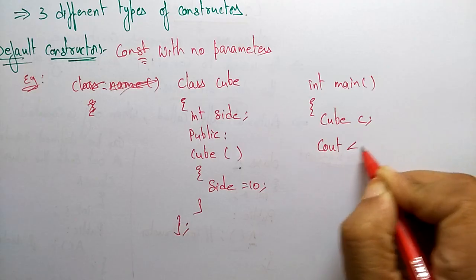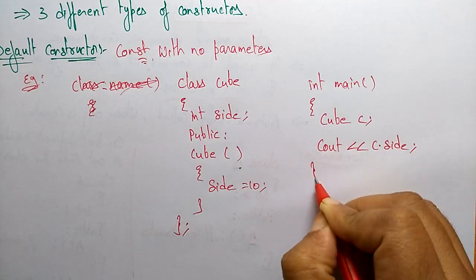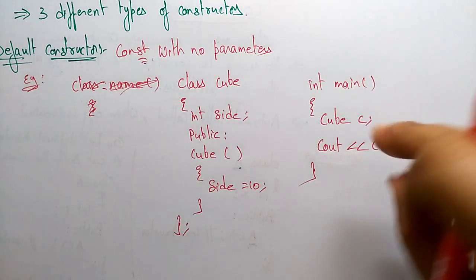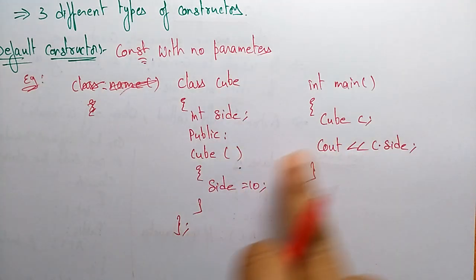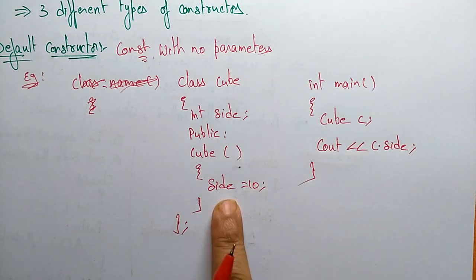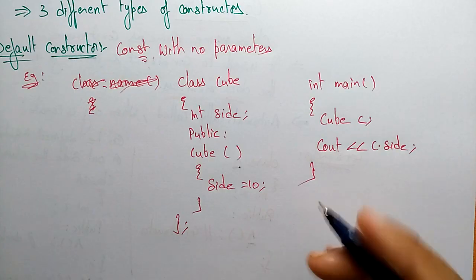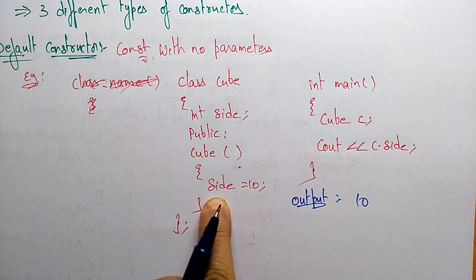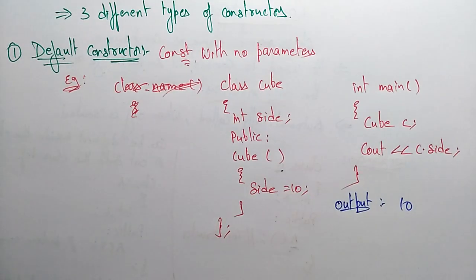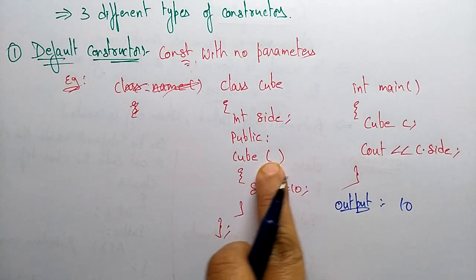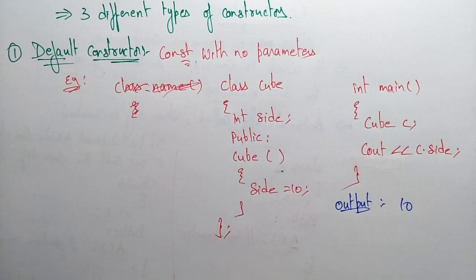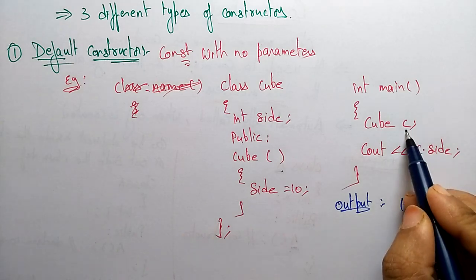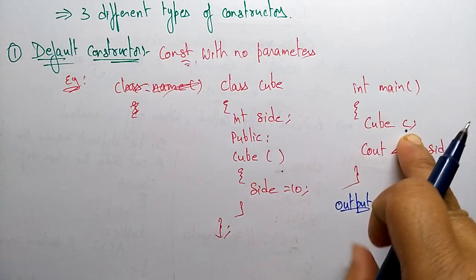Then cout c.side. The program enters main, reads cube c — cube is the class and c is the object — so the constructor is called automatically. c.side: what is the side value? It is 10. So the output is 10. This is the default constructor — constructor with no parameters. As soon as the object is created, the constructor is called and initializes the data member.